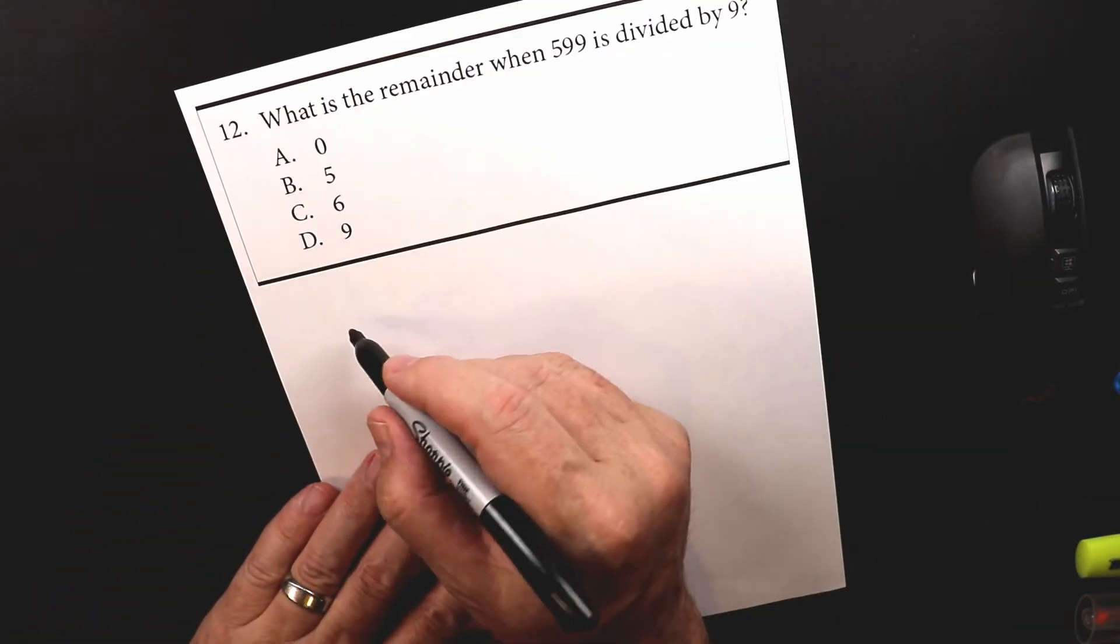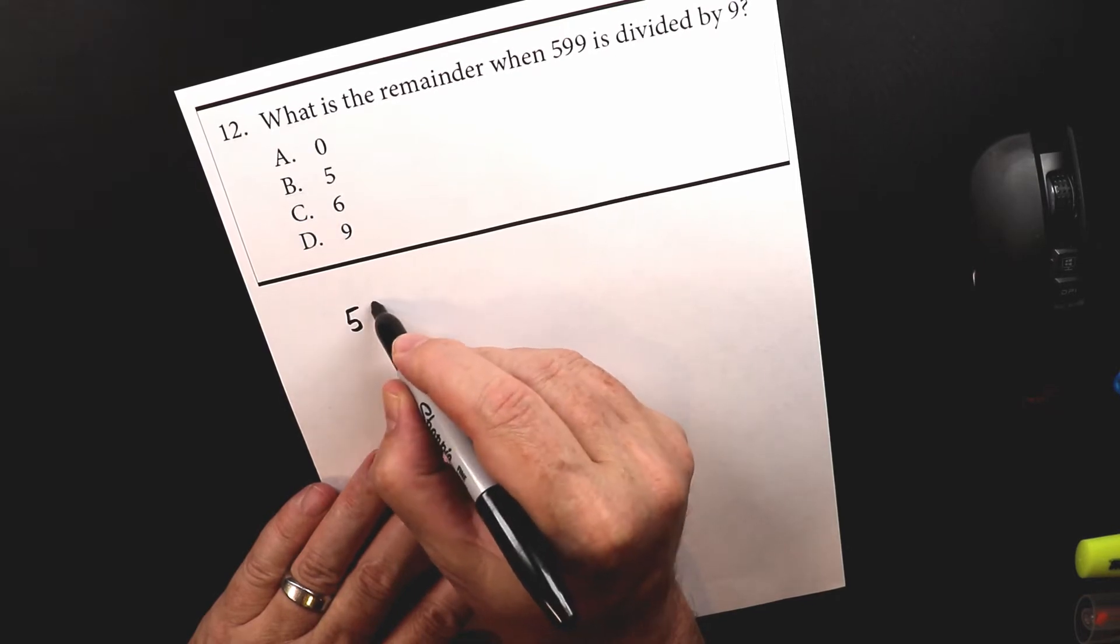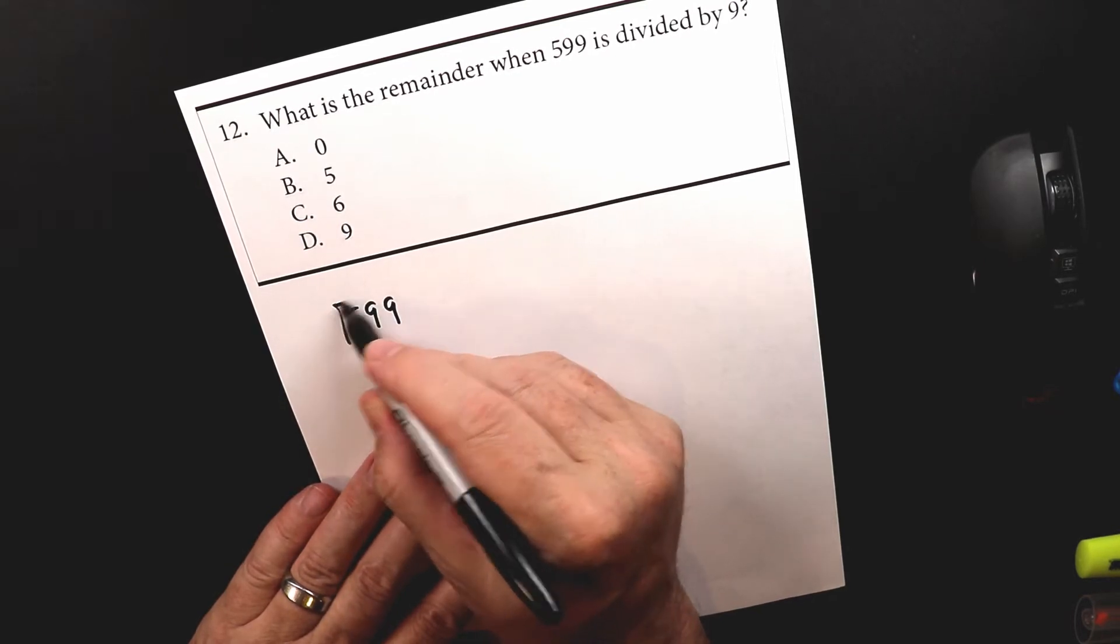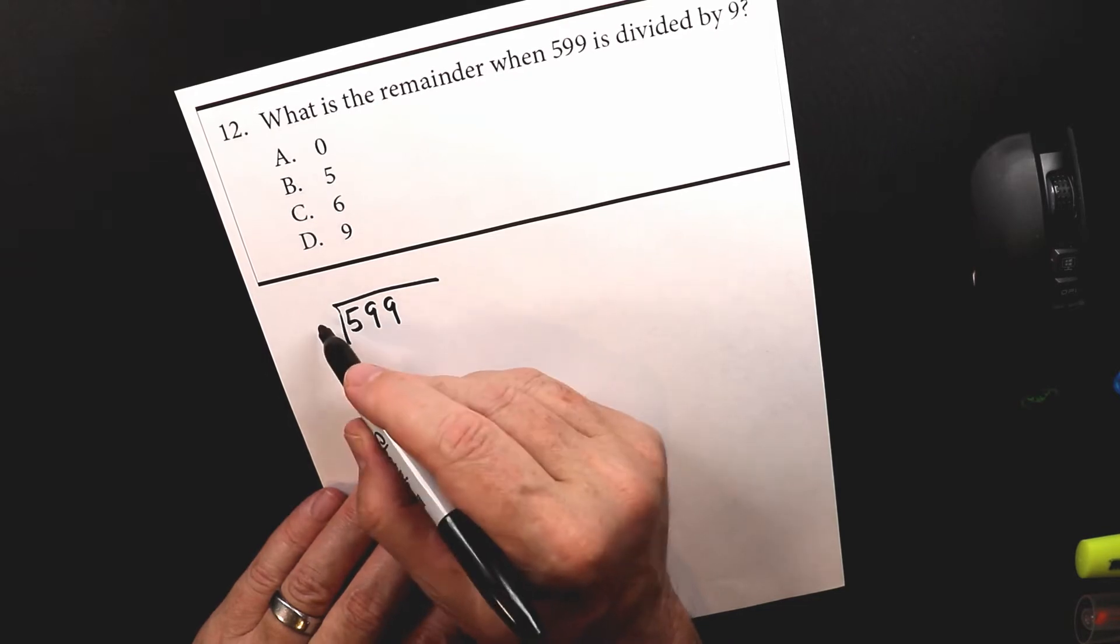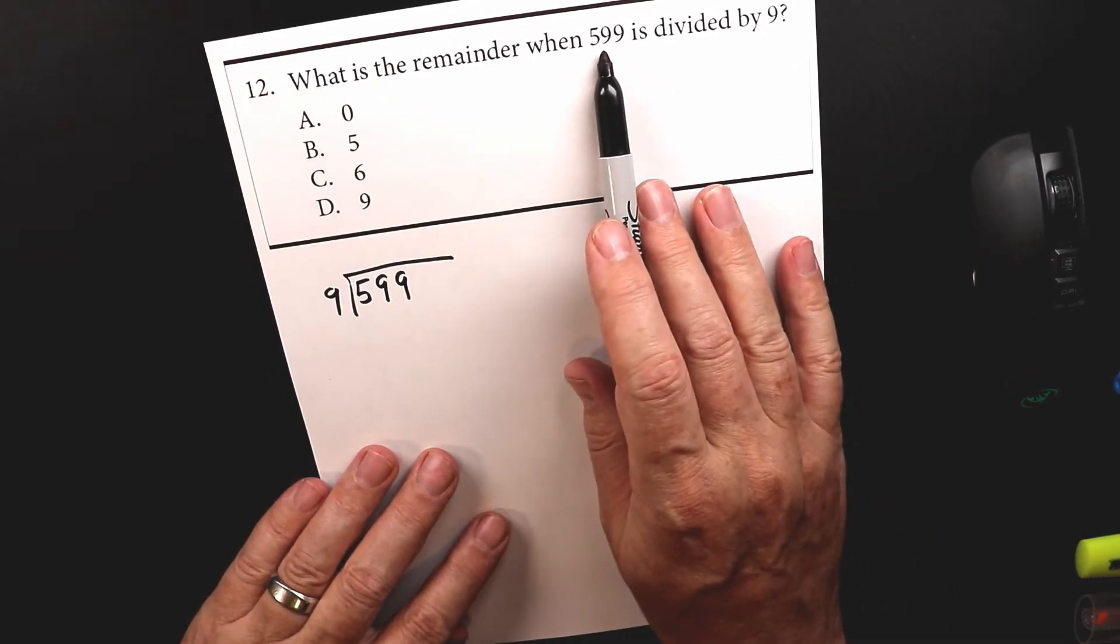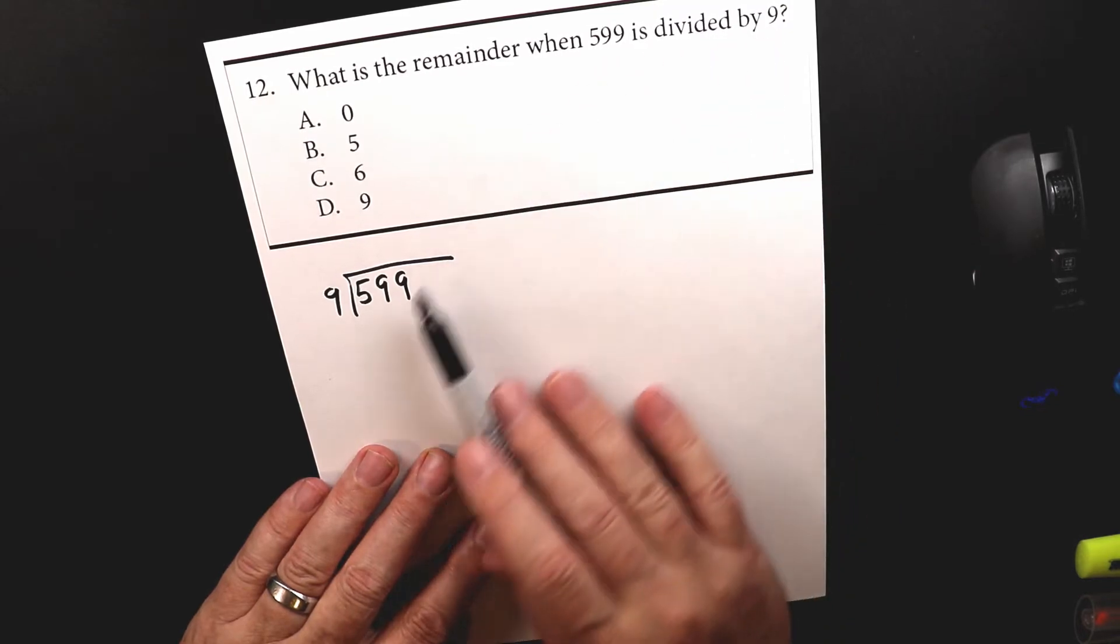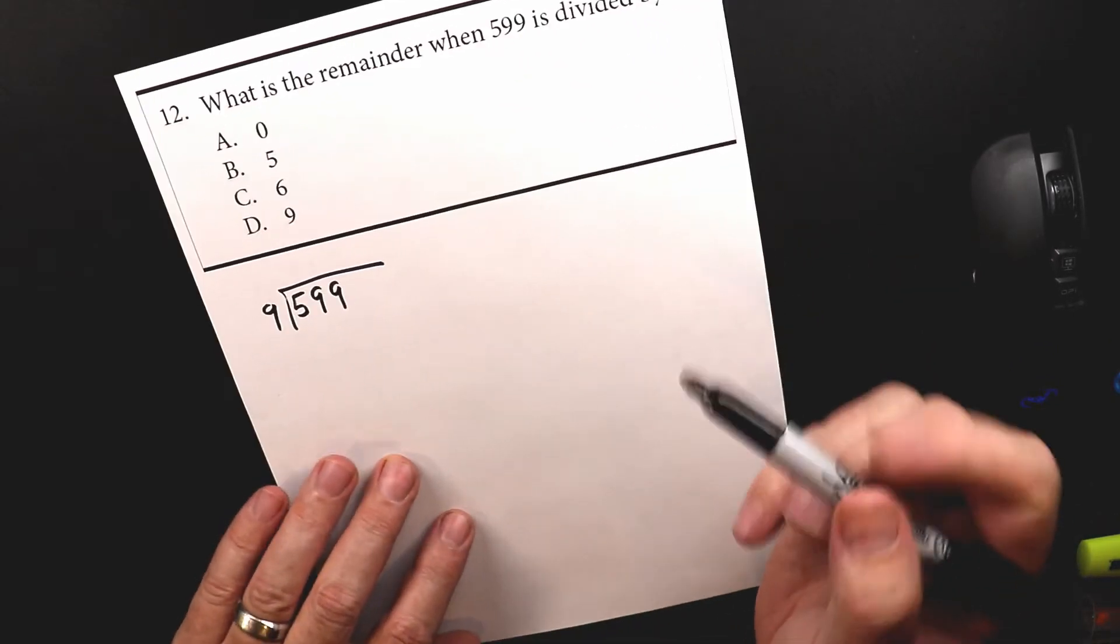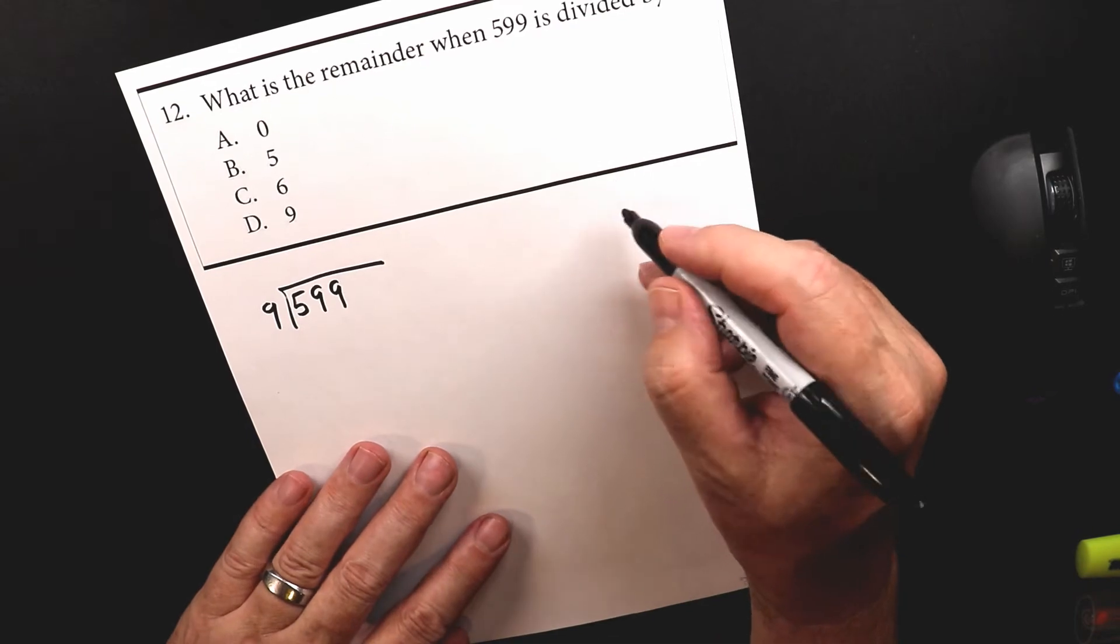So what we're going to do is we're going to set up 599. 599 goes in the house and nine goes outside the house. So 599 is divided by nine. In this case, we're going to need the nine times tables.